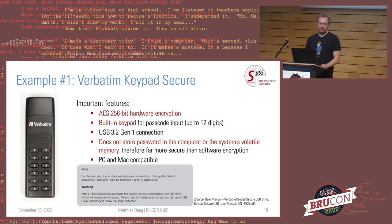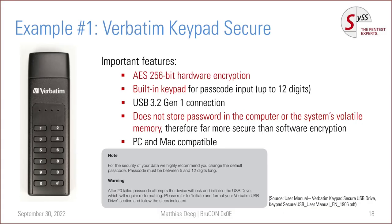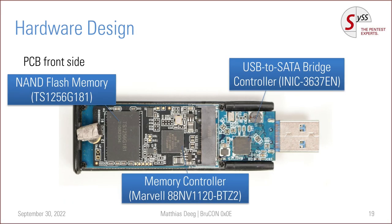The first device I want to talk about is the Verbatim Keypad Secure. Important features Verbatim mentions in their marketing include AES 256-bit hardware encryption, a built-in keypad, no password stored in the computer's volatile memory where malware could extract it, and PC and Mac compatibility. There is also a lockout mechanism — after 20 failed passcode attempts, the device will lock and initialize the USB drive, reformatting it so everything is lost and inaccessible to attackers.